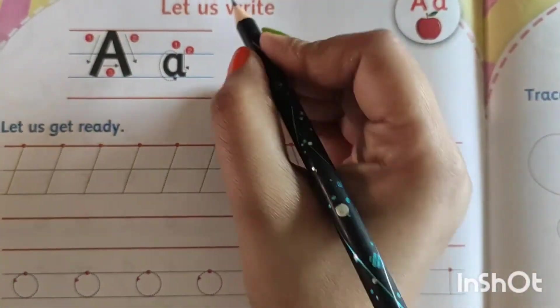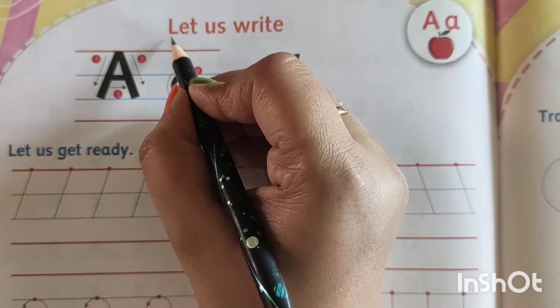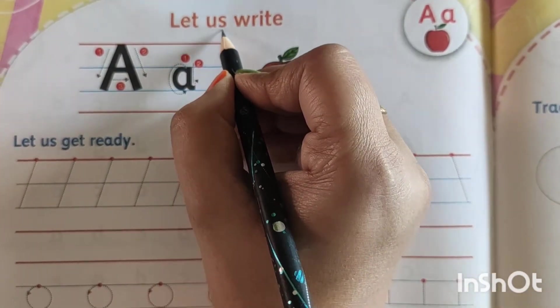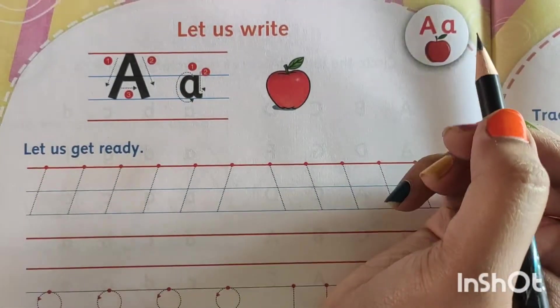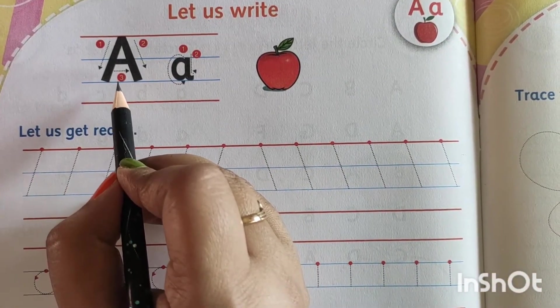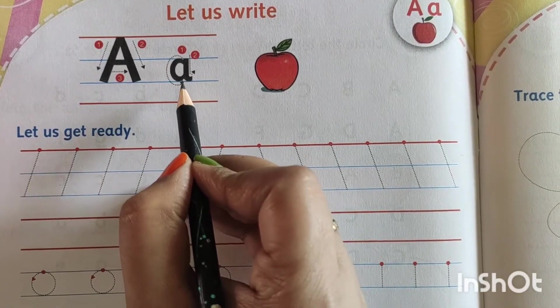The topic is let us write. L-E-T let, U-S us, write W-R-I-T-E. What is this? This is capital A. This is small a.